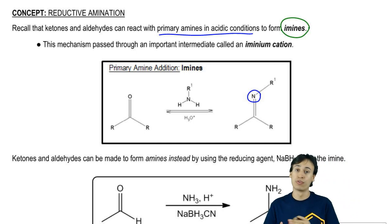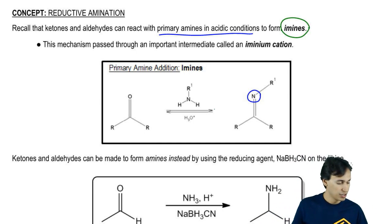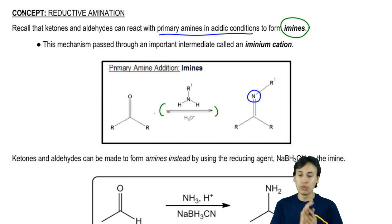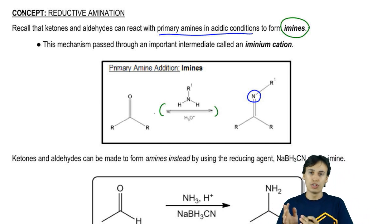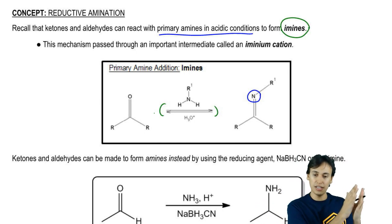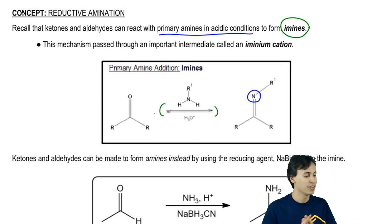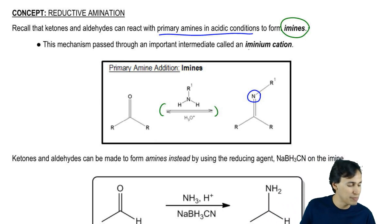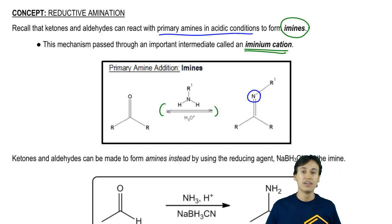This mechanism was a reversible reaction. Remember that you have your double-sided equilibrium arrows showing that you can go from the carbonyl to the imine and then back to the carbonyl, but regardless of which direction you're going, you always have to pass through a really important intermediate. That intermediate was called the iminium cation. The iminium cation was an intermediate where your nitrogen had a positive charge on it.